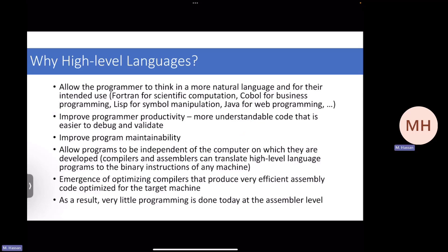Why do we have high-level languages? Why don't we write assembly? Because it's more human-readable, and writing assembly is very hard — but also very important for maintainability, modularity, code sharing, and productivity. All the things we discuss in object-oriented programming concepts — you would never be able to achieve those writing zeros and ones.